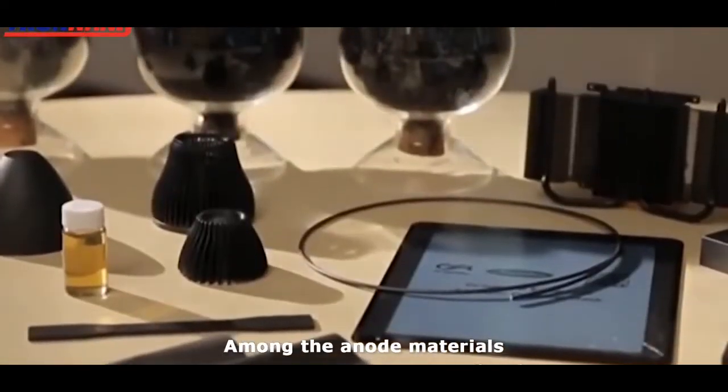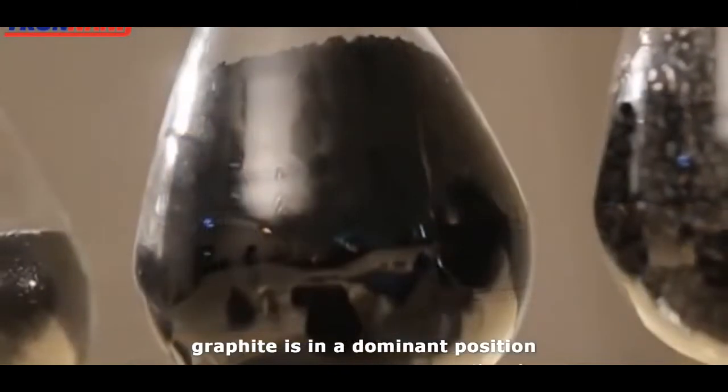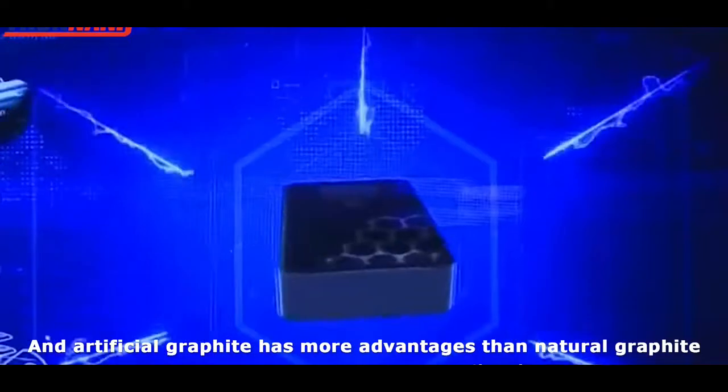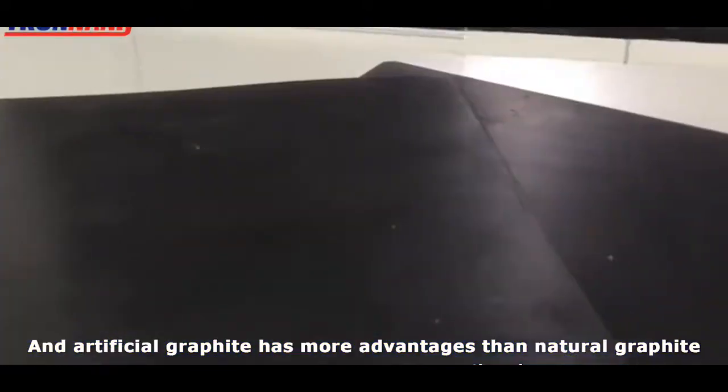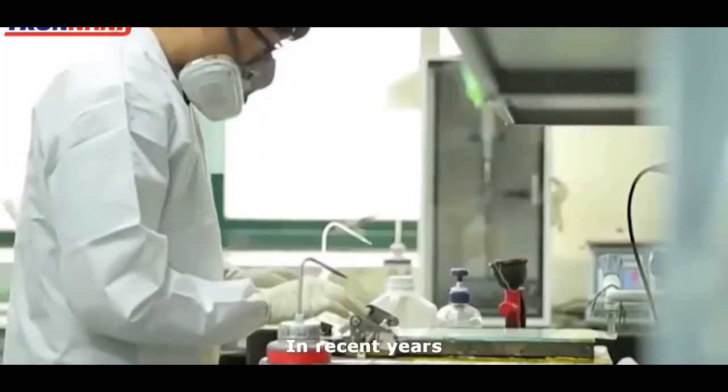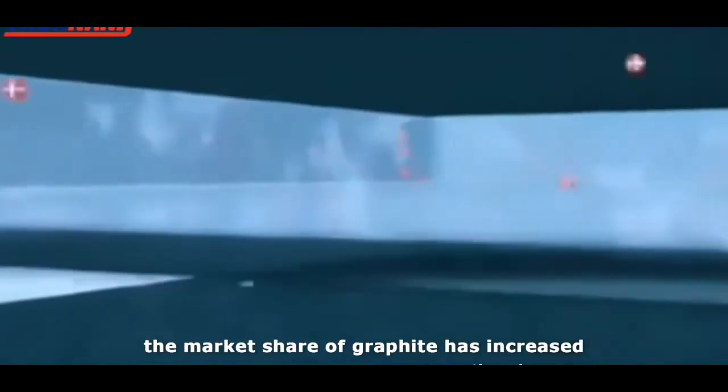Among the anode materials, graphite is in a dominant position. Artificial graphite has more advantages than natural graphite. Its market share is estimated to be around 70%. In recent years, the market share of graphite has increased.